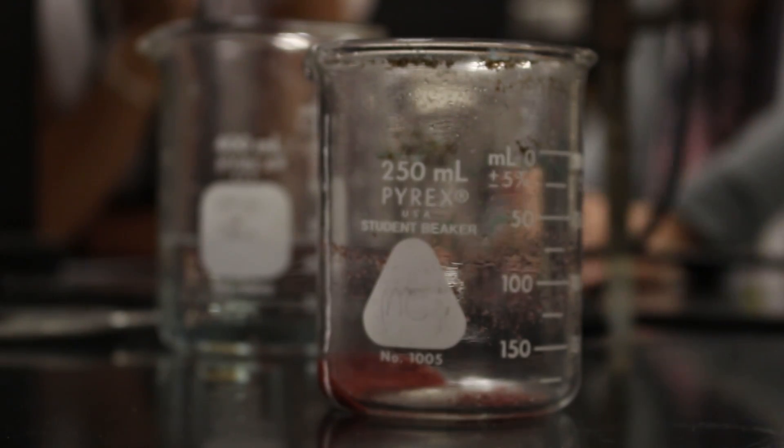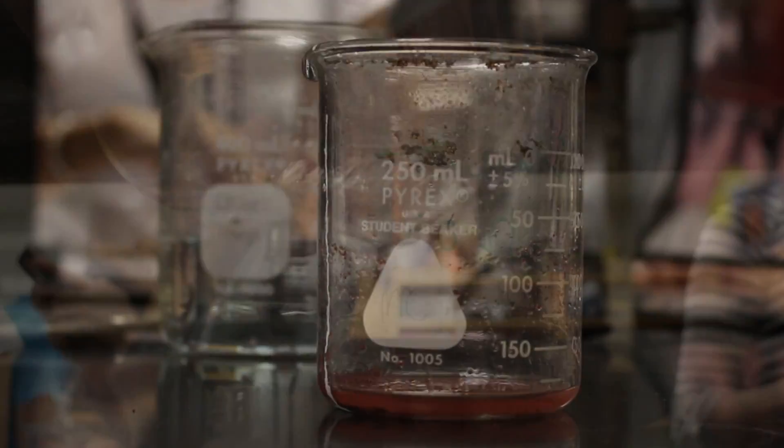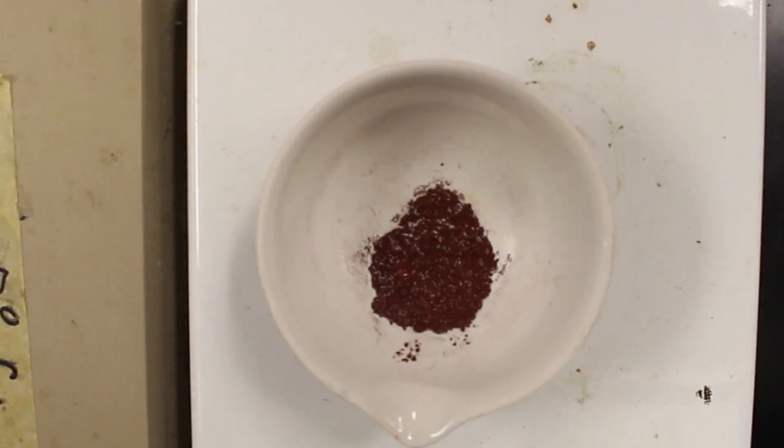We added 5 milliliters of acetone to help dry out the copper and finished drying it on a hot plate to produce 0.4882 grams of solid copper.